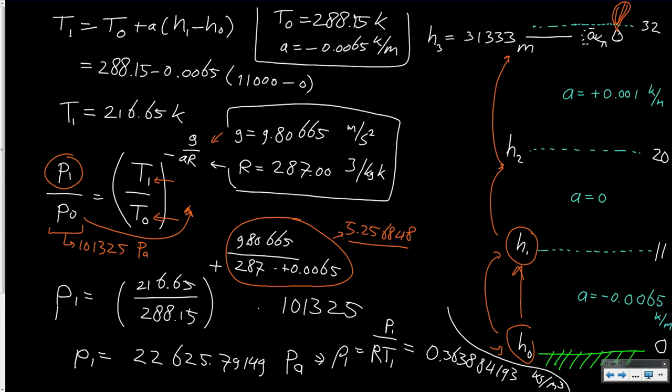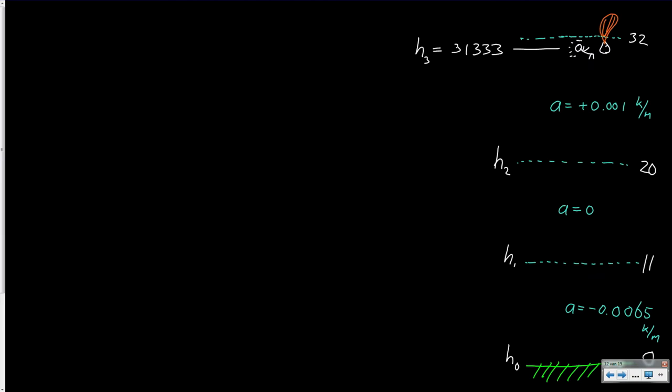The next step is to make sure that we carry on in the direction of 20 kilometers. So basically we are going to do the same, but we see in the second layer that we have an isothermal layer. Let's first copy the values which we had at the start. T1 we had at the start is 216.65 Kelvin, and P1 is 22625.79149 Pascal. Now we have a layer where the lapse rate is zero, which means that our second temperature is the same as the first one, 216.65 Kelvin. So we are quickly done with the temperature.